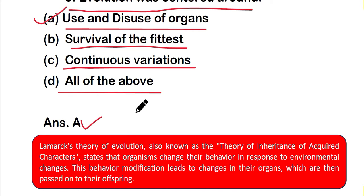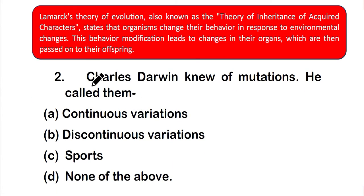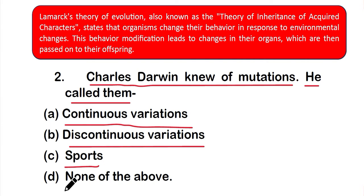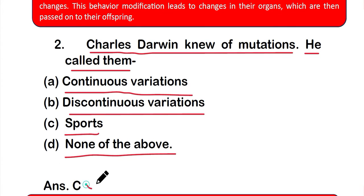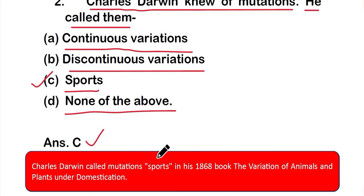This behavior modification leads to changes in their organs, which are then passed on to their offspring. That is the main idea of Lamarck's theory of evolution. Question 2: Charles Darwin knew of mutation and he called it — option A: continuous variation, option B: discontinuous variation, option C: sports, or option D: none of the above. The correct answer is option C — sports. Charles Darwin called mutations within animals 'sports.'